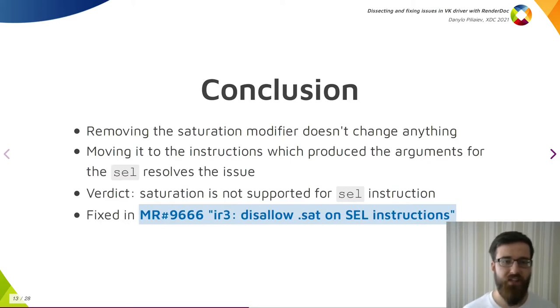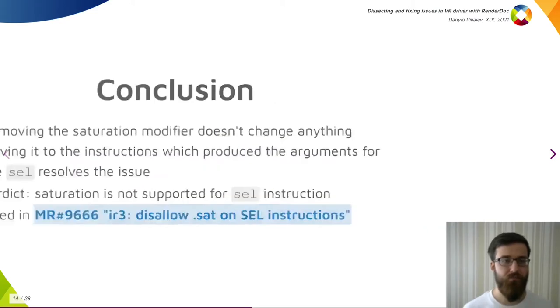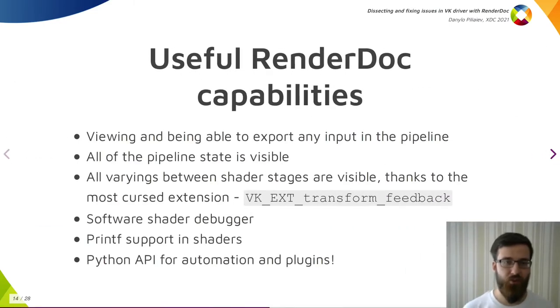This concludes my example. And as I said, the steps I followed are applicable to many issues you may face. What are the other useful RenderDoc capabilities? The most useful for us are, firstly, being able to view and export any input to the pipeline - vertices, UBOs, SSBOs, textures, everything you may want. Possibility to inspect the state of any shader stage. To inspect varyings between each shader stage. This varyings inspection is possible thanks to the most cursed Vulkan extension, VK_EXT_transform_feedback. Next one, software debugger for SPIR-V, is a relatively recent addition, and as we have seen, it is very effective, allowing to find the issue without resorting to making and opening the capture on another GPU.